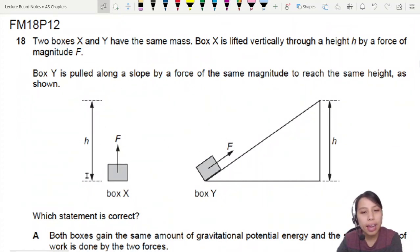Here we have two boxes X and Y with the same mass. Box X is lifted vertically through a height by a force of magnitude F. Box Y is pulled along a slope to reach the same height. Which statement is correct?